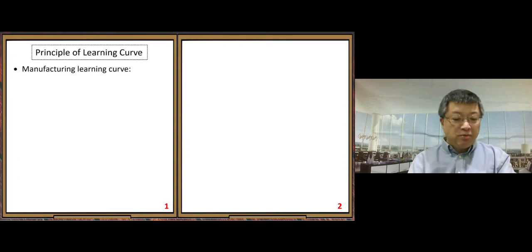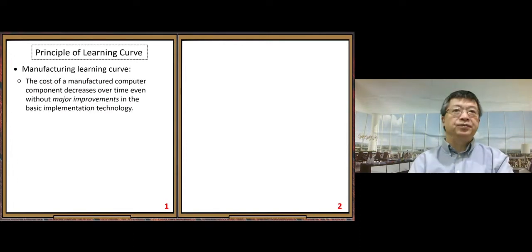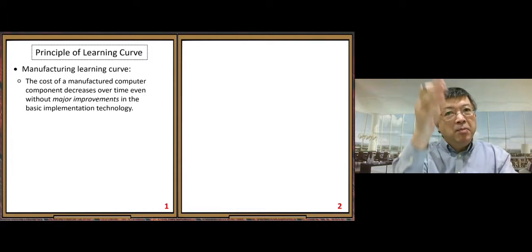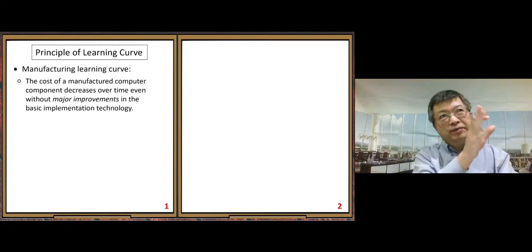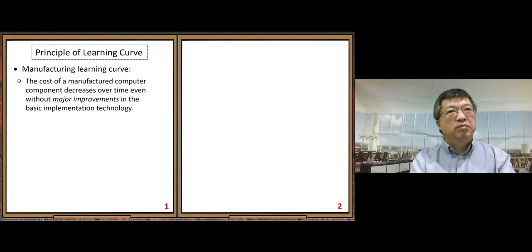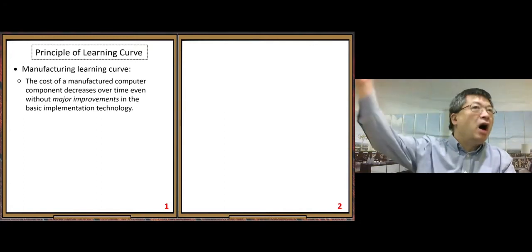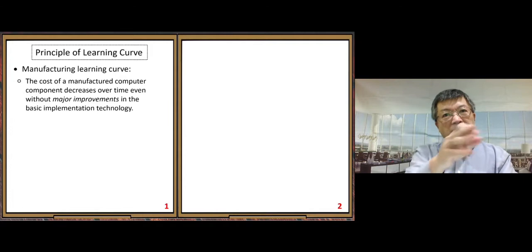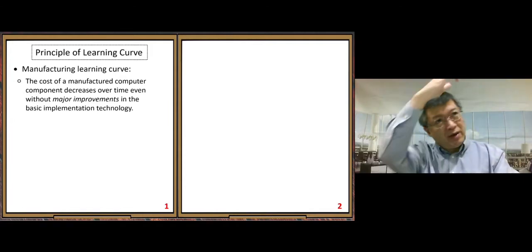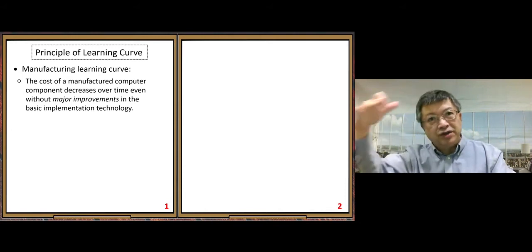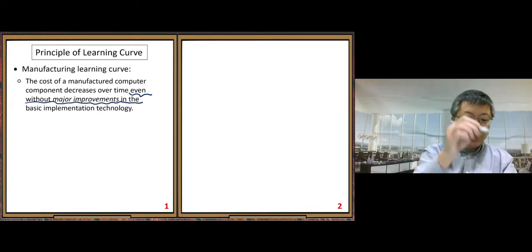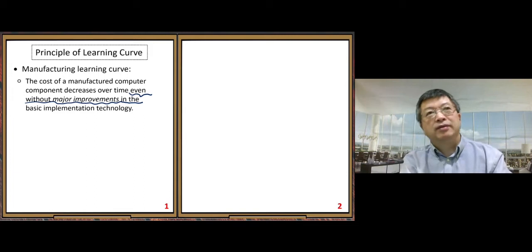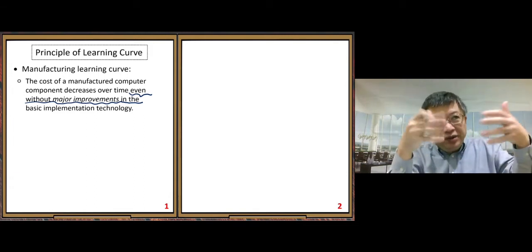The manufacturing learning curve refers to how the cost of manufactured components — for example, computer components — decreases over time. Although computer components are used as the example here, this principle can be generalized to other products as well. The cost decreases over time, and the important part is that this happens even without major improvements in the basic implementation technology.